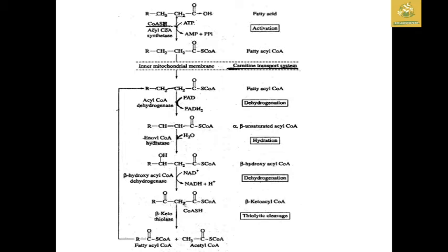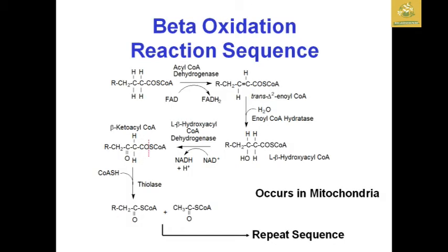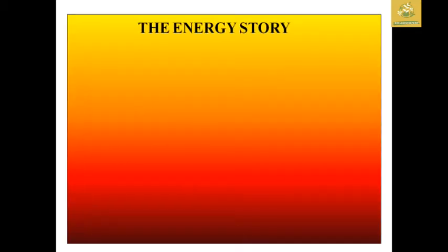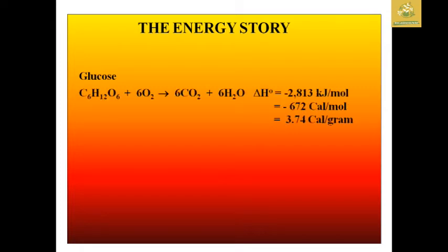The fatty acyl-CoA is acted upon by acyl-CoA dehydrogenase to form beta-unsaturated acyl-CoA; after hydration and reduction, the final products fatty acyl-CoA (shortened by 2 carbons) and acetyl-CoA are produced. This repeated sequence generates four 2-carbon acetyl-CoA compounds.